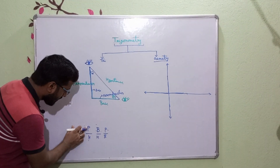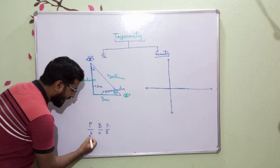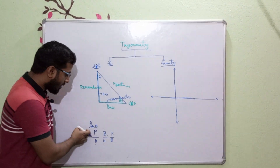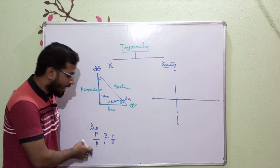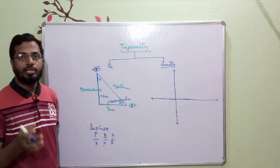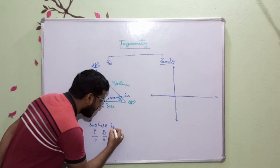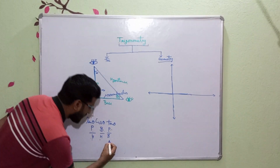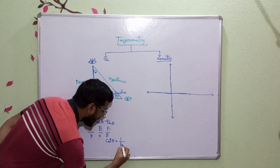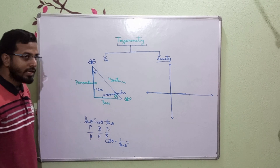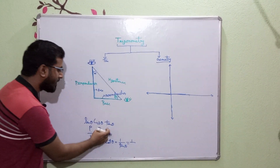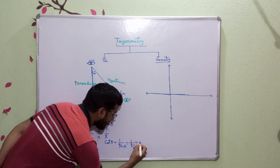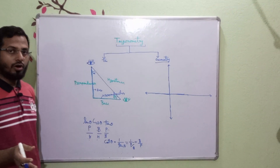So regarding P, B, and H: sine theta is equal to perpendicular upon hypotenuse. Cosine theta is equal to base upon hypotenuse. Tan theta is equal to perpendicular upon base. Cot theta is equal to 1 upon tan theta, and since tan theta is P by B, cot theta is just the opposite: B by P.